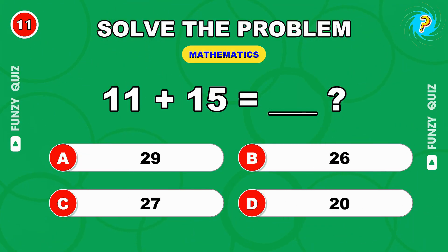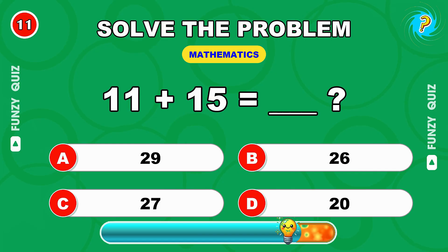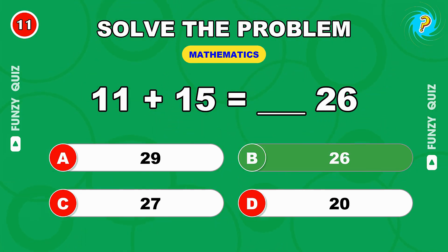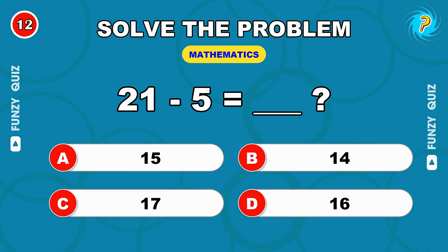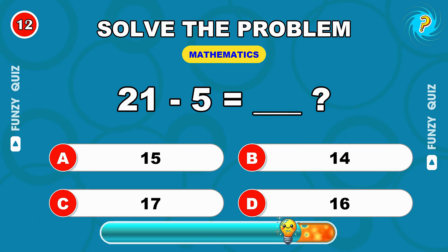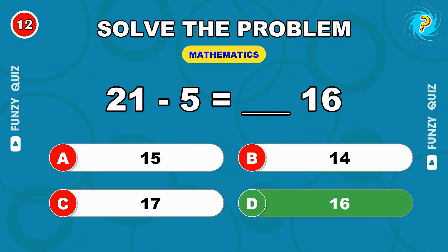Okay, here's 11 plus 15. 26, nailed it. What does 21 minus 5 equal? 16, well done.